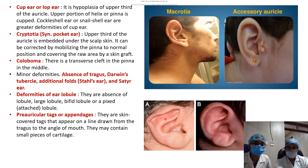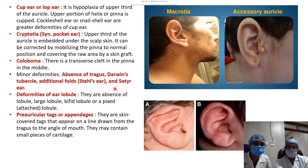Coloboma is a transverse cleft in the middle of the pinna, which can be shallow or deeper. Minor deformities include absence of the tragus, Darwin's tubercle, and additional folds called Stahl's ear and satyr ear. Deformities of the lobule include absence of lobule, excessively large lobule, bifid lobule, or attached lobule — similar to cryptotia, in which the lobule is embedded in the skin of the neck.